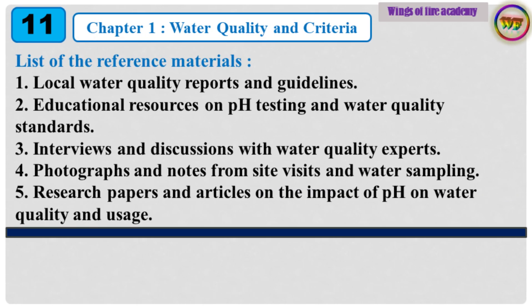List of Reference Materials: 1. Local water quality reports and guidelines. 2. Educational resources on pH testing and water quality standards. 3. Interviews and discussions with water quality experts. 4. Photographs and notes from site visits and water sampling. 5. Research papers and articles on the impact of pH on water quality and usage.